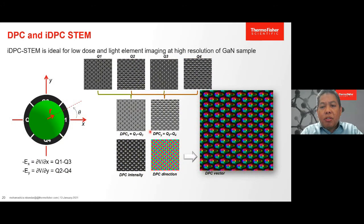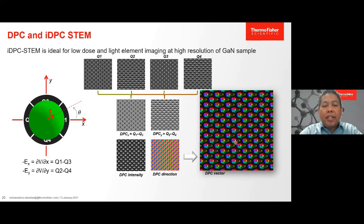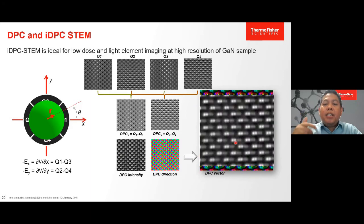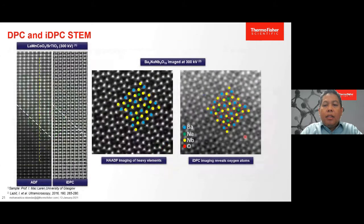The iDPC system works differently from DPC. Instead of measuring electron deflection due to the magnetic field, we measure the intensity difference over the four quadrants. We process the image the same as DPC and as a result we can image light elements and also do low-dose imaging. An example shows how we can nicely see the dumbbell atoms of gallium and nitrogen. Previously, we could only see the dumbbell atoms of gallium.